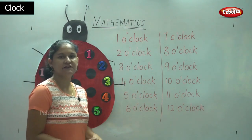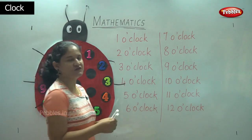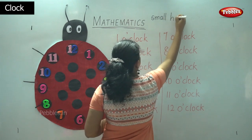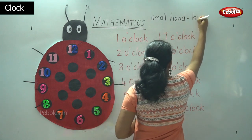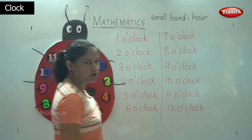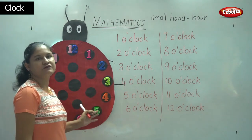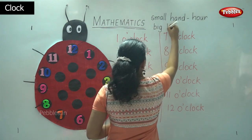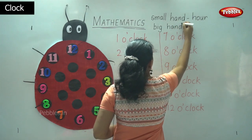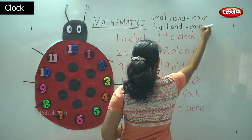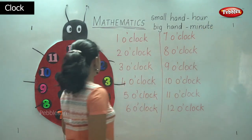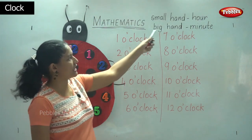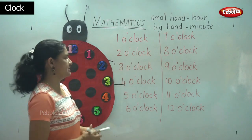This is the way we write the timings. Next we will move on to the hands of the clock. The small hand is called the hour hand. It shows the hours — whether it is 1 o'clock, 2 o'clock, 3 o'clock, 4 o'clock, or 5 o'clock. It tells us what the hour is. And the big hand is called the minute hand. It shows us whether it is 1:30, 2:30, 3:30 — it shows us the minutes of the clock.